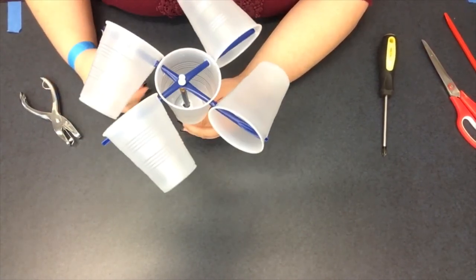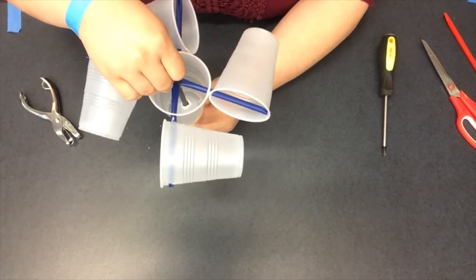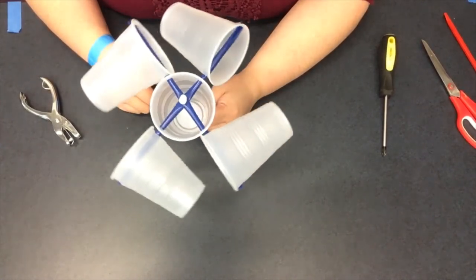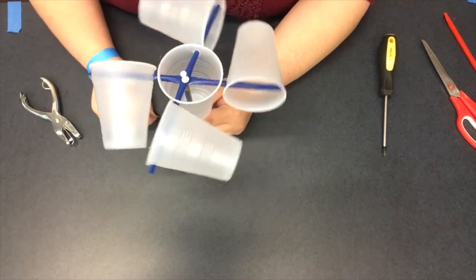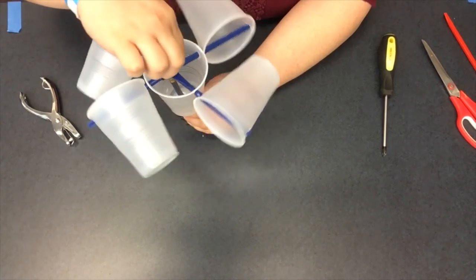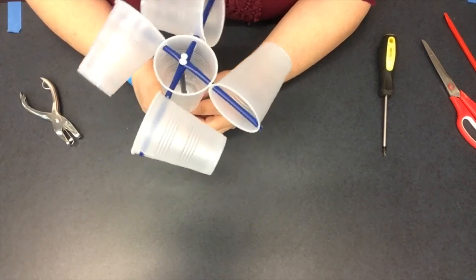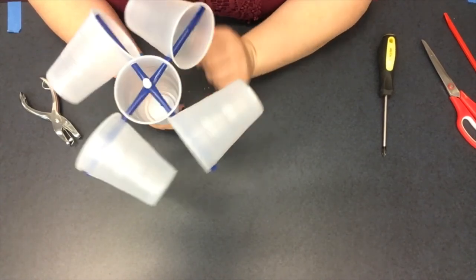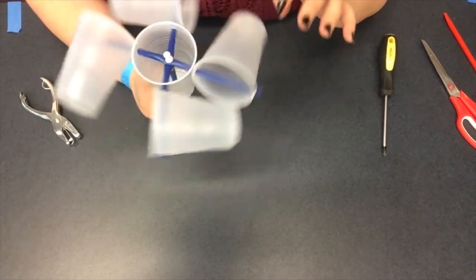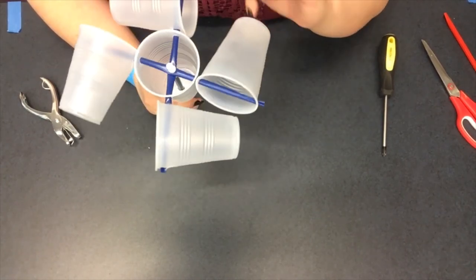And then if you give it a little spin, it should spin. And if you blow in your cups, they should spin. And if they're not spinning, you can adjust how tight or loose your push pin is. And if you're having trouble with your cups falling off, you can tape or glue them in place because the only part that needs to move is this spot right here in the middle with the push pin. Everything else can be glued in place as tightly and securely as you want. So that's your basic anemometer that shows you how fast your wind speed is going. The faster it's spinning, the faster your wind's going.